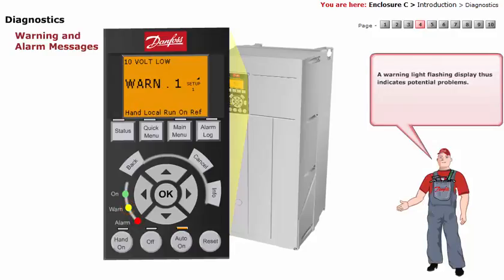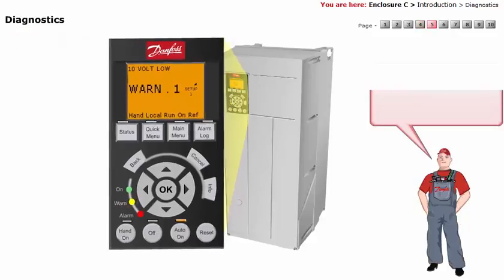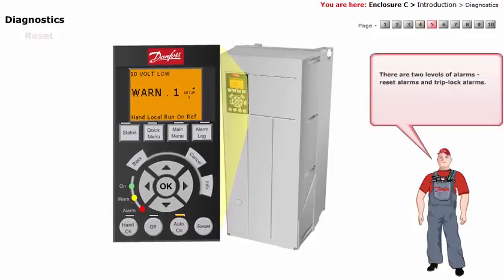A warning light flashing display thus indicates potential problems. There are two levels of alarms: reset alarms and trip lock alarms.